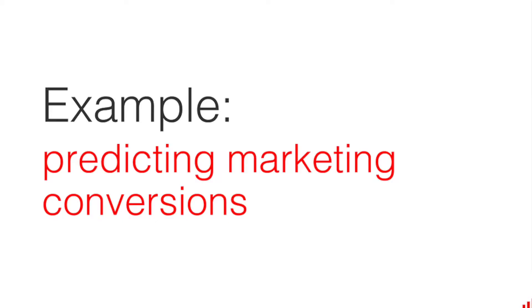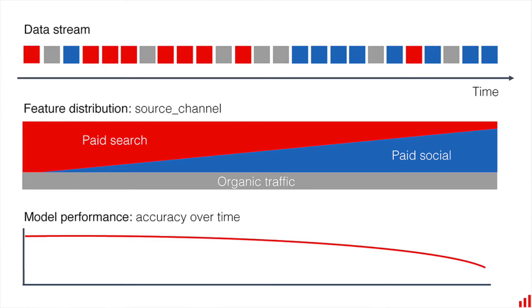Let's take an example. Imagine you have a marketing model that predicts which users are likely to convert and make a certain purchase. You train this model using past data about visitors to your website and existing conversions, but these users mostly came from paid search channels. Now the marketing team launches a new campaign and a lot of visitors are coming from social networks. These users might have different attributes and different behavior, and if your model has not seen many examples like this it will likely not perform well.